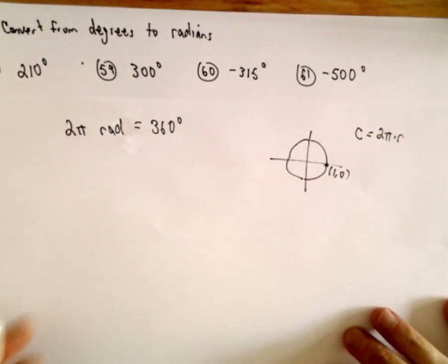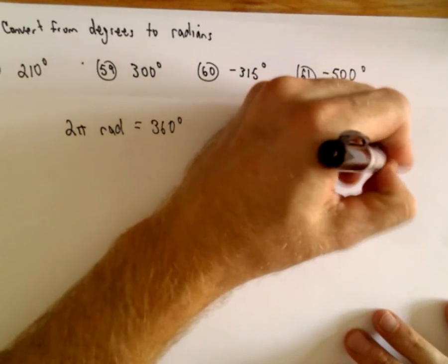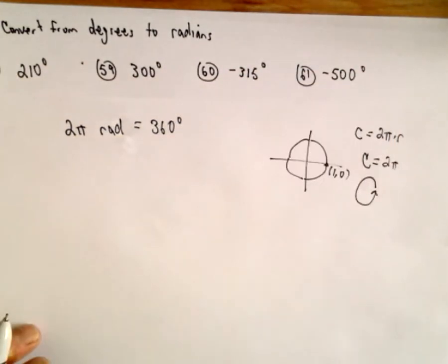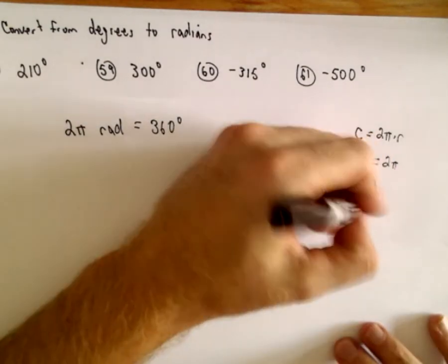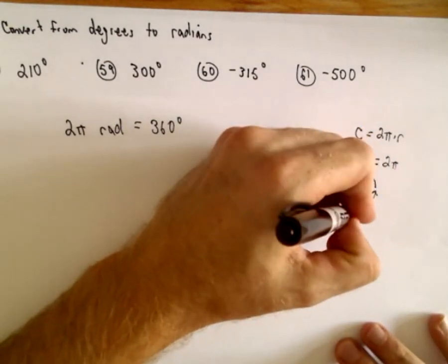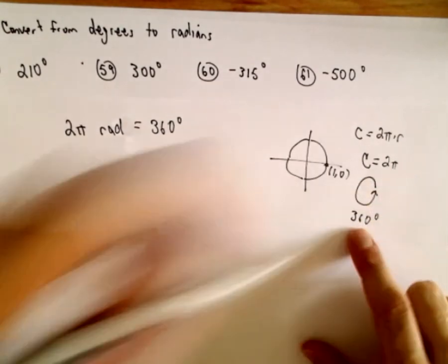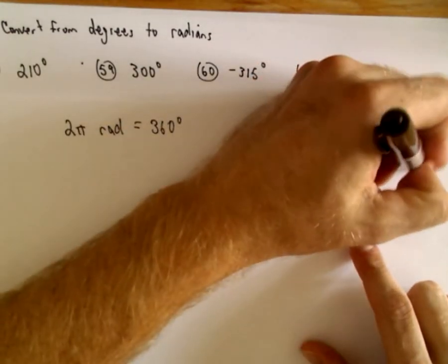Well, the radius of our circle here is 1, so the circumference is going to be 2 pi. So we say the distance around is 2 pi radians. Well, the distance all the way around the circle, if you turn around, that's 360 degrees. So we're getting that 2 pi radians is equal to 360 degrees.